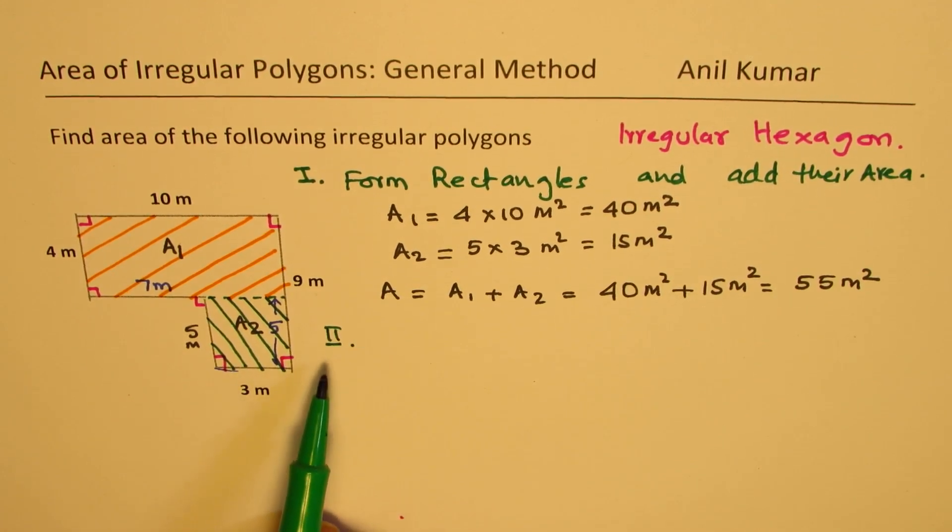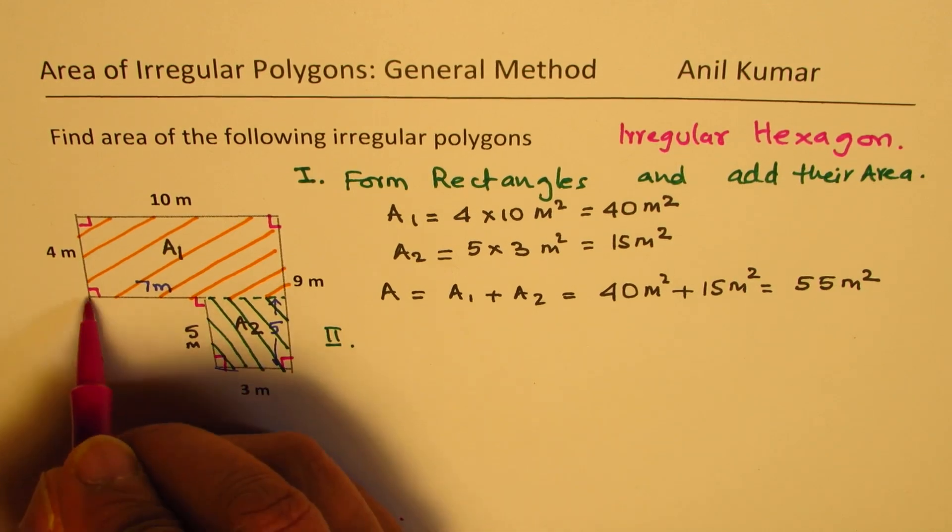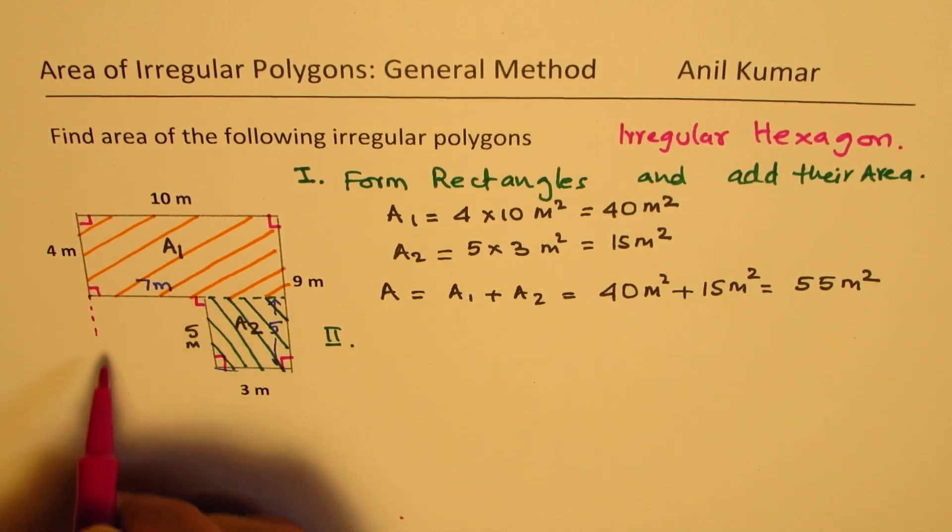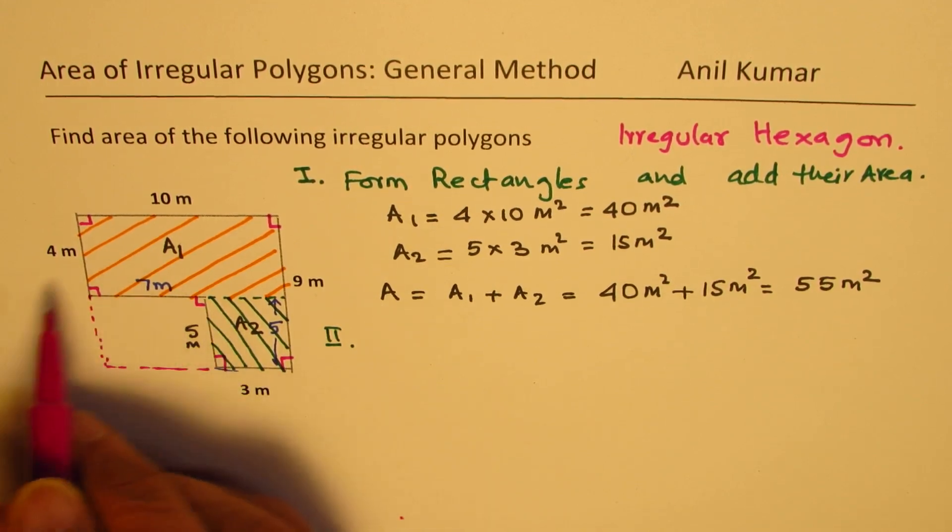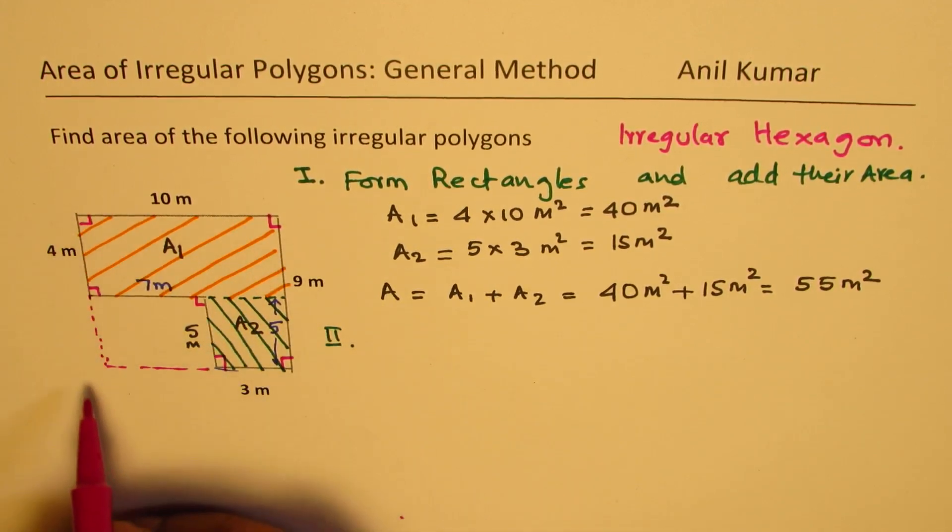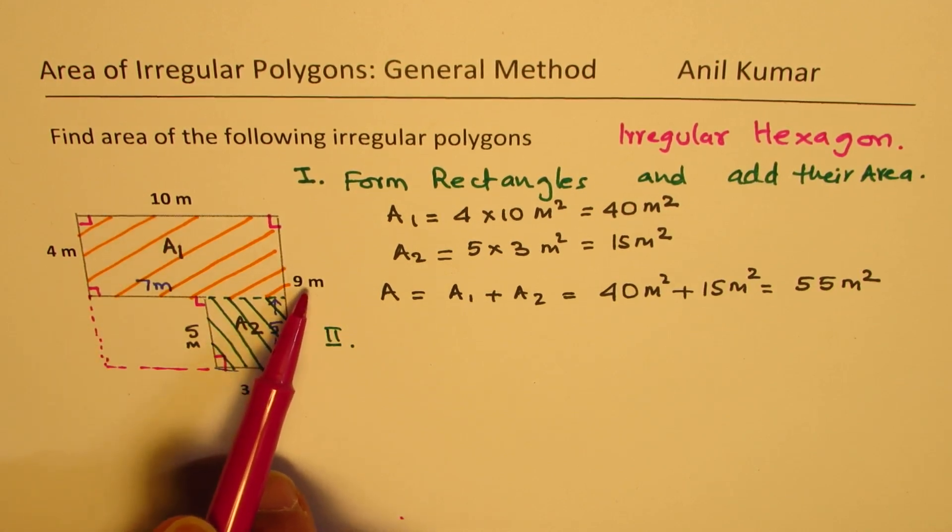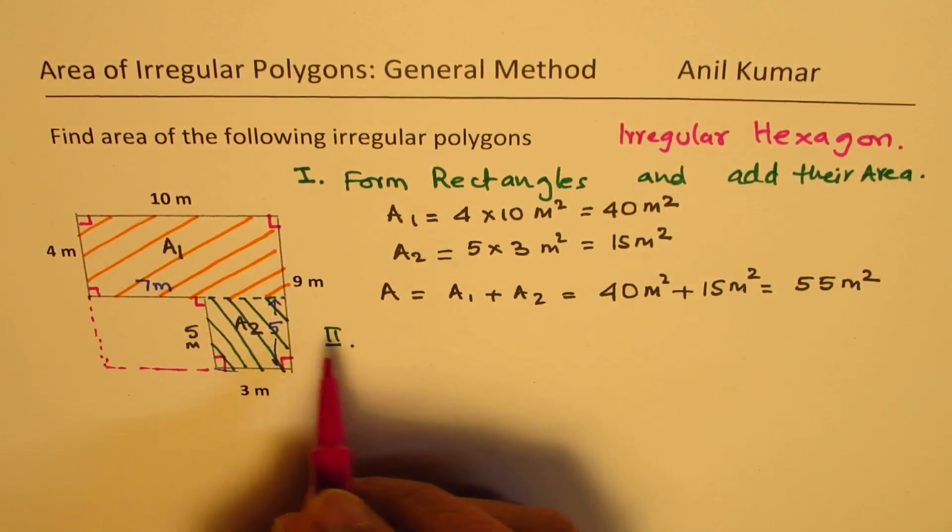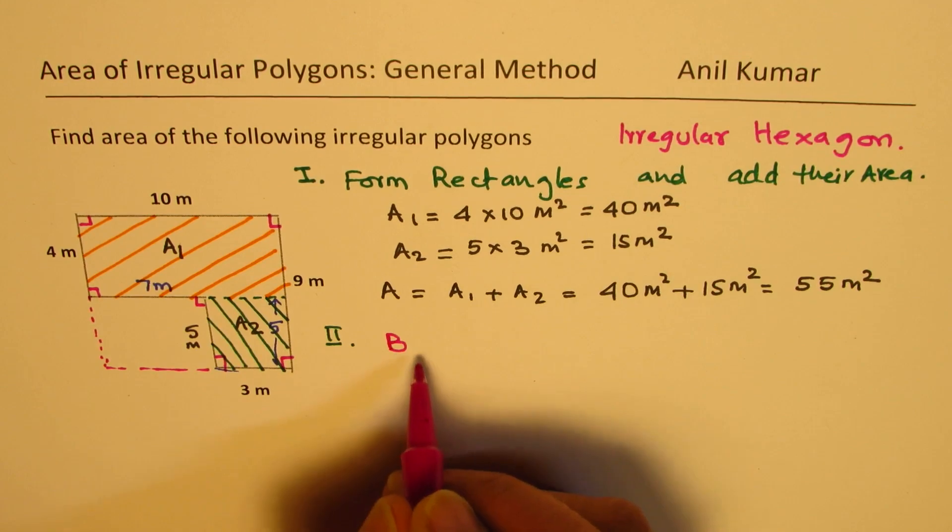Now in second method, what we are going to do is we'll consider a big rectangle. So what we could do is we can form a bigger rectangle. So now we have a very big rectangle, which is 10 by 9. So we have a big rectangle, let's call this as B.